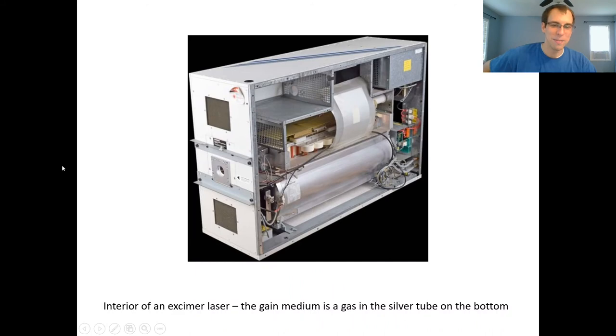This is what the inside of an excimer laser looks like. I don't remember which model this one is in particular, but the actual lasing medium is this part down here, this big silver tube on the bottom. That's where the actual gases go to generate the excimer laser. And you can see some of the capacitors here. Most of the rest of this is just electronics to generate that electric discharge at the right repetition rate and frequency.